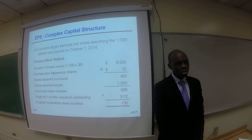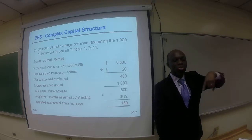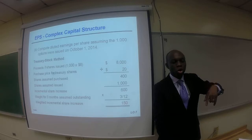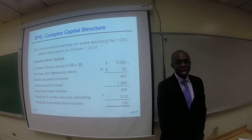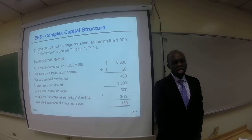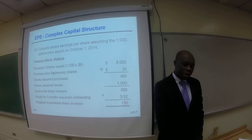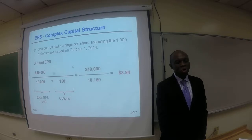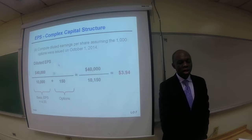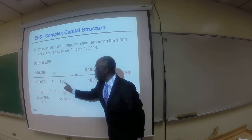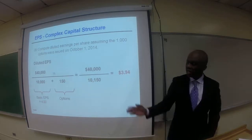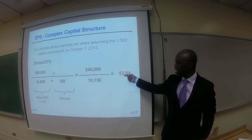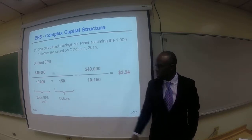Now we twist it: we compute diluted EPS assuming the 1,000 options were issued on October 1st instead of at the beginning of the year. Again, $8,000 divided by $20 equals 400, so the net incremental shares are still 600. But now we weight for three months — October, November, December — so 3/12 multiplied by 600 gives us 150. The weighted incremental share increase is 150. To compute the diluted EPS, we now have 150 additional incremental shares, which modifies the denominator, giving us a diluted EPS of $3.94 versus basic EPS of $4.